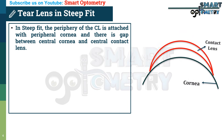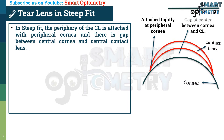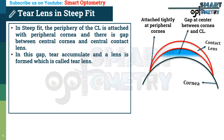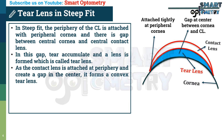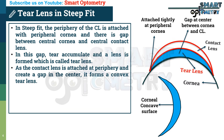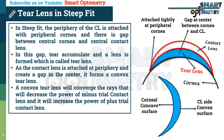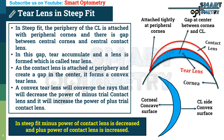In steep fit, the periphery of the contact lens is attached to the periphery of the cornea, and there is a gap between the central anterior surface of the cornea and the central posterior surface of the contact lens. In this gap, tear accumulates and a lens is formed called the tear lens. As the contact lens is attached at the periphery and creates a gap at the center, it forms a convex tear lens — precisely a concavo-convex tear lens, where the inner surface is concave (corneal side) and the outer surface is convex (contact lens side). A convex tear lens will converge the rays, which decreases the power of a minus trial contact lens and increases the power of a plus trial contact lens. So in steep fit, minus power of the contact lens is decreased and plus power is increased.